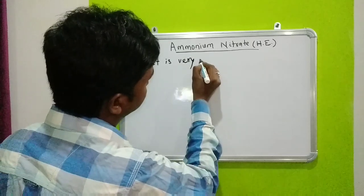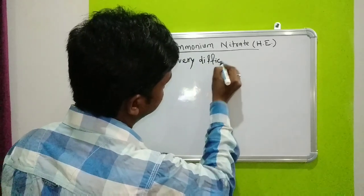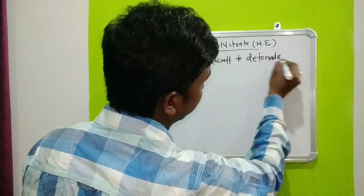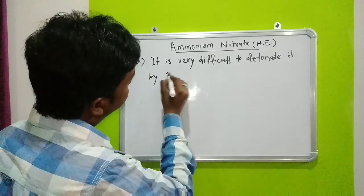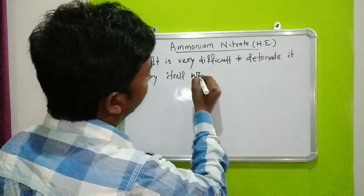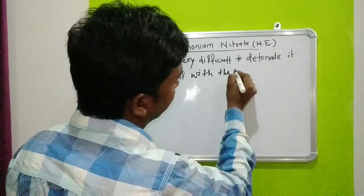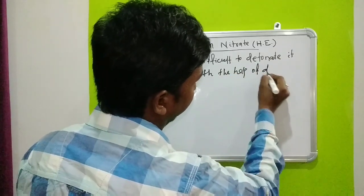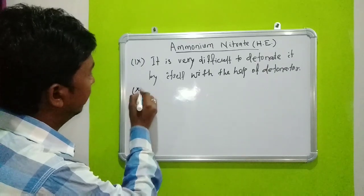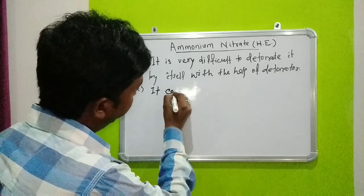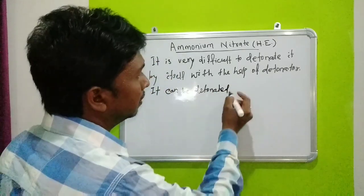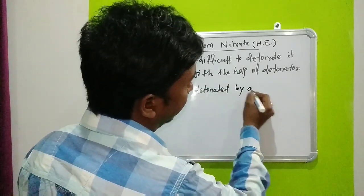Ammonium nitrate is very difficult to detonate by itself. With the help of a detonator it can be detonated, or it can be detonated by a booster.